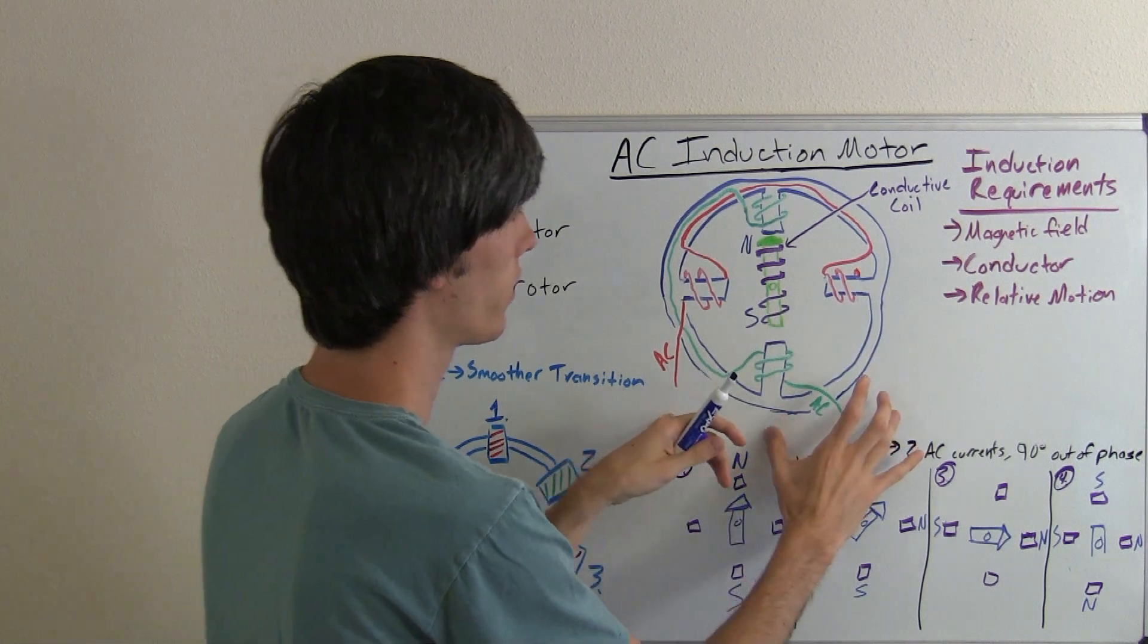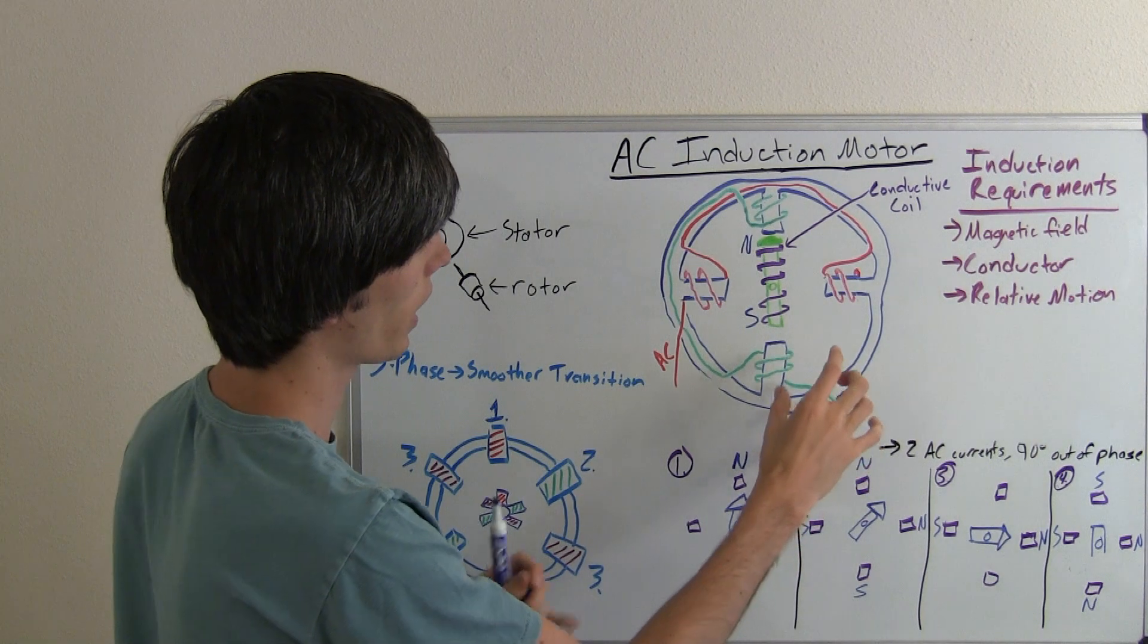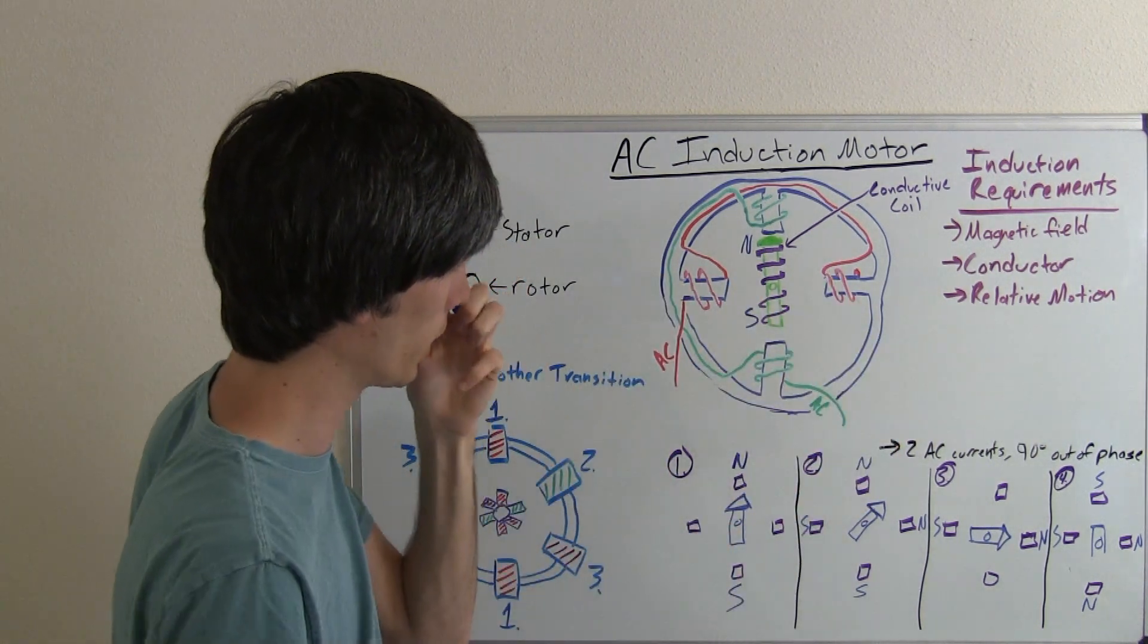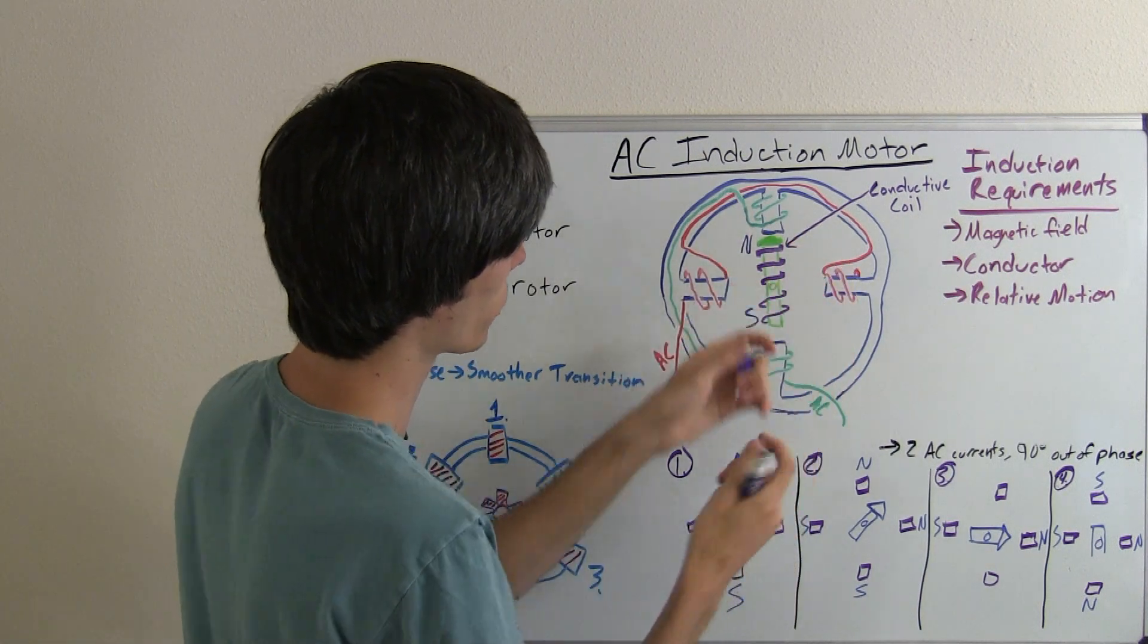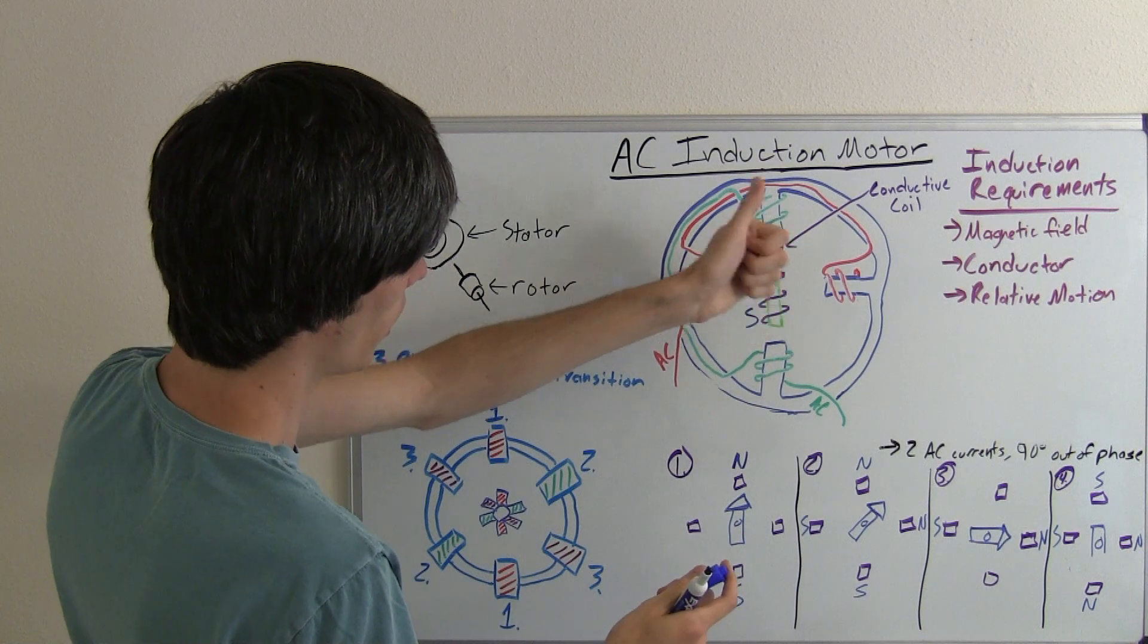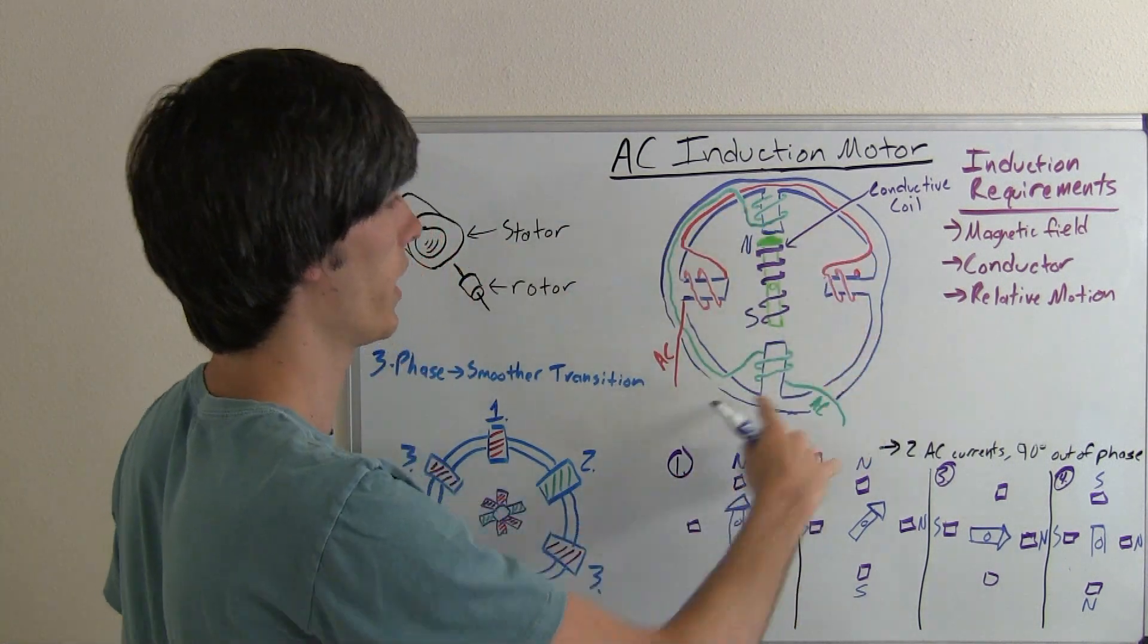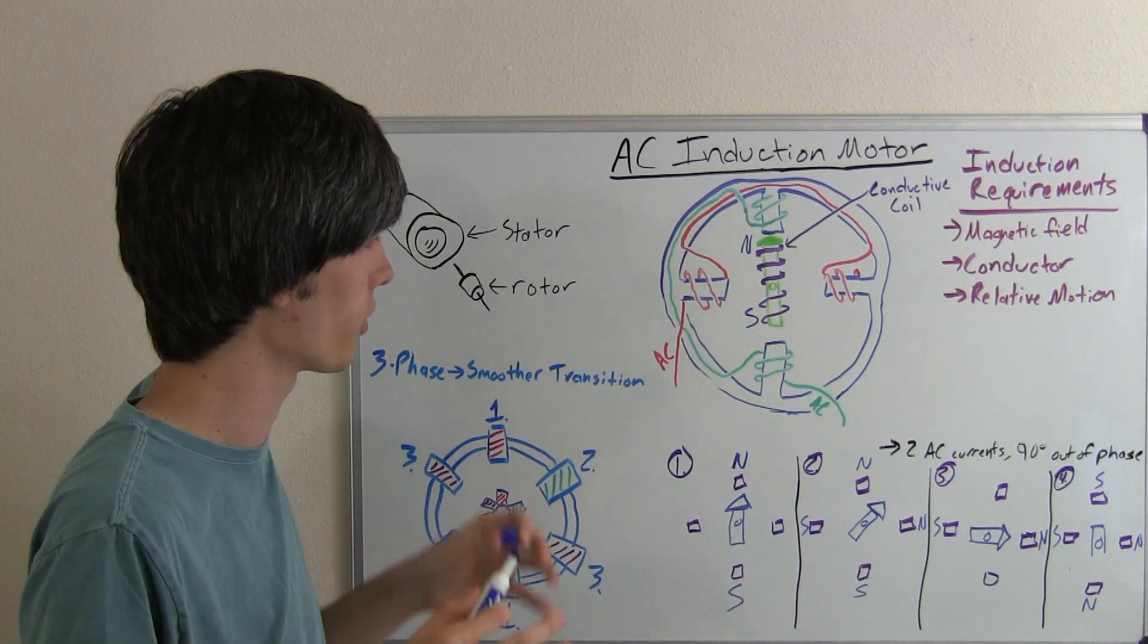So this is a two-phase AC induction motor where you're going to have two phases of alternating currents. They're off by 90 degrees, and it's going to cause this induced current to create an electric field, or a magnetic field, and that magnetic field will attempt to follow the rotating magnetic field. So hopefully, if you watched my other videos, this all makes sense.